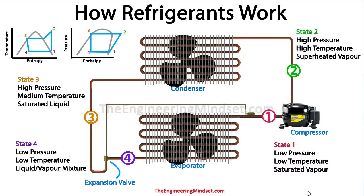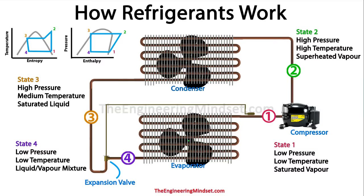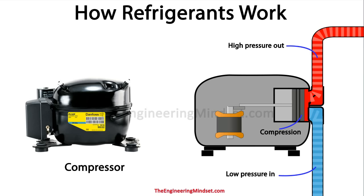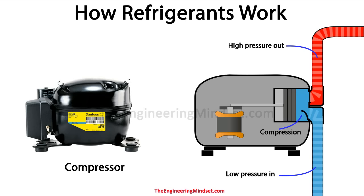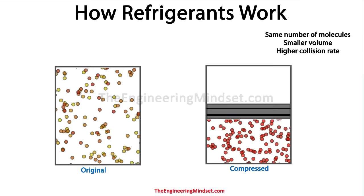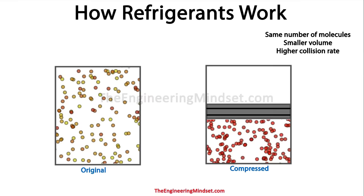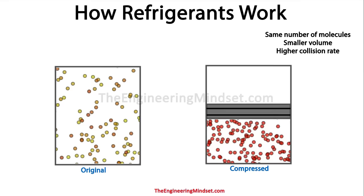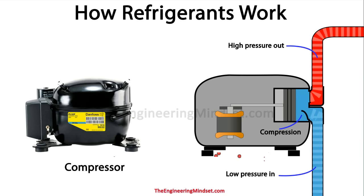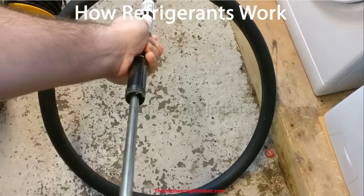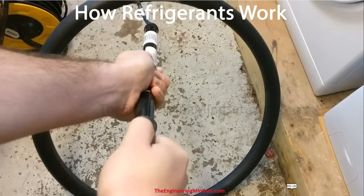We'll start with the compressor because it's the driving force, pushing the refrigerant around the system. We're going to look at a basic piston type to make it clear and easy to understand. The refrigerant enters the compressor as a saturated vapor at low temperature and low pressure. The compressor pulls it in and rapidly compresses it, forcing the molecules together so the same number of molecules fit into a smaller space. This increases the collision rate of the molecules — as they collide they convert kinetic energy into heat — and all the energy put in by the compressor is converted into internal energy within the refrigerant. This results in the refrigerant increasing in internal energy, enthalpy, temperature, and pressure, just like a bike pump gets very hot as pressure increases.